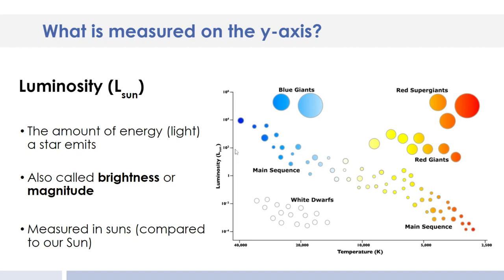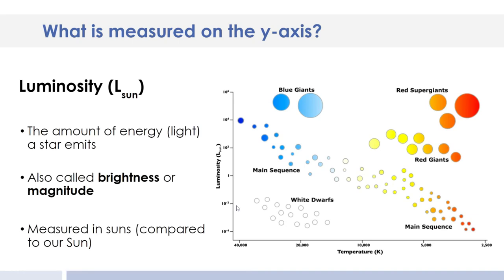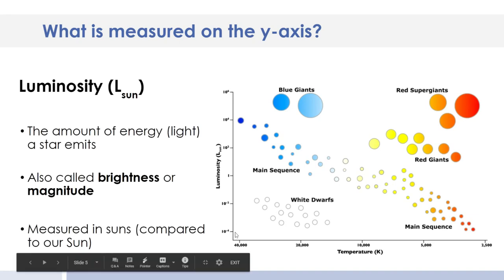And here it's 10 to the second, which would be 100 times brighter than our sun anywhere along this line, 10,000 times brighter than our sun anywhere along this line, and 1 million times brighter than our sun anywhere along this line. And then below it, we've got things that are not as bright as our sun. So 1/100th of our sun and 1/10,000th of our sun down here.